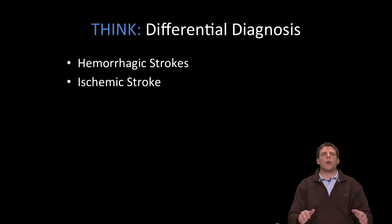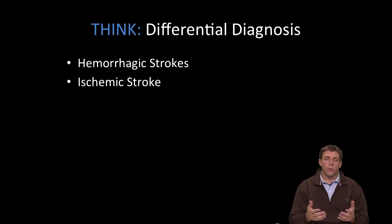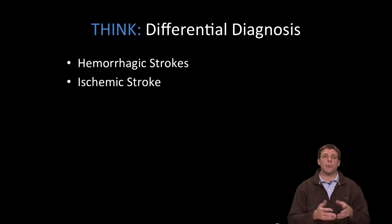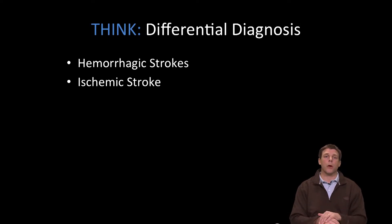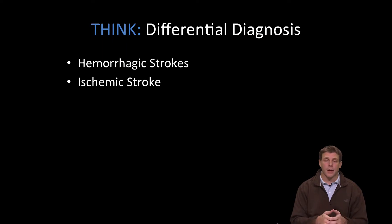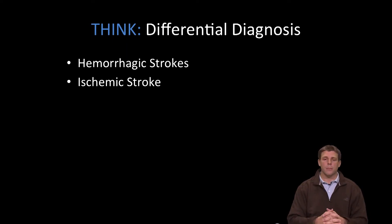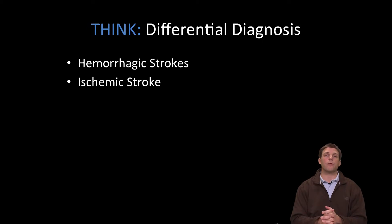We also discussed the different types of stroke: hemorrhagic stroke, in which there is a bleeding aneurysm or blood vessel in the brain, or ischemic stroke, in which a blood vessel has been blocked — likely by atherosclerotic disease — and blood flow to a segment of the brain has been interrupted.